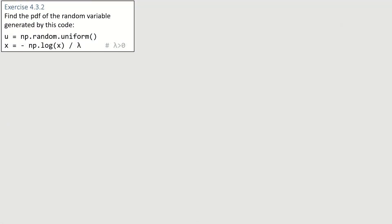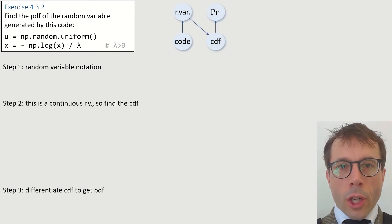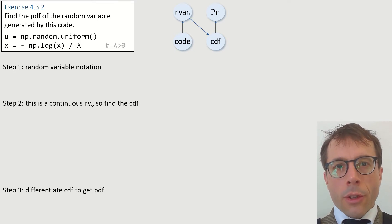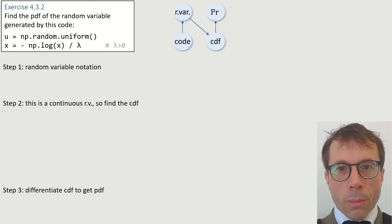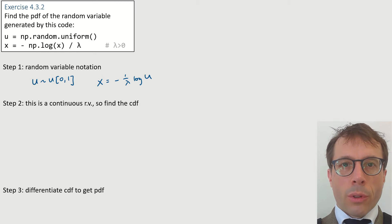Have a read of this question. We'll follow the standard strategy. We'll write it out in random variable notation. Then, since it's a continuous random variable, we'll find the cumulative distribution function, and then we'll differentiate to get the PDF. Let's get started. Here it is in random variable notation. First, generate a uniform from 0 to 1 random variable, then let x be given by this formula here.